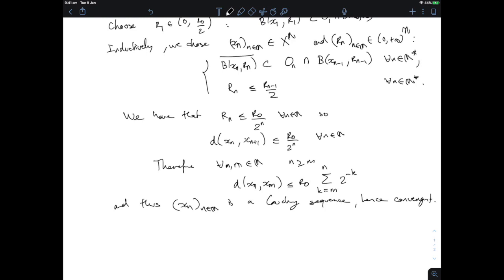Now there exists an x in X such that xₙ, the distance of xₙ to x, tends to zero as n goes to infinity. But what can I say about that x? I can say that for every n, because the balls are inside each other, for every n, x belongs to the closure of B(xₙ, rₙ).